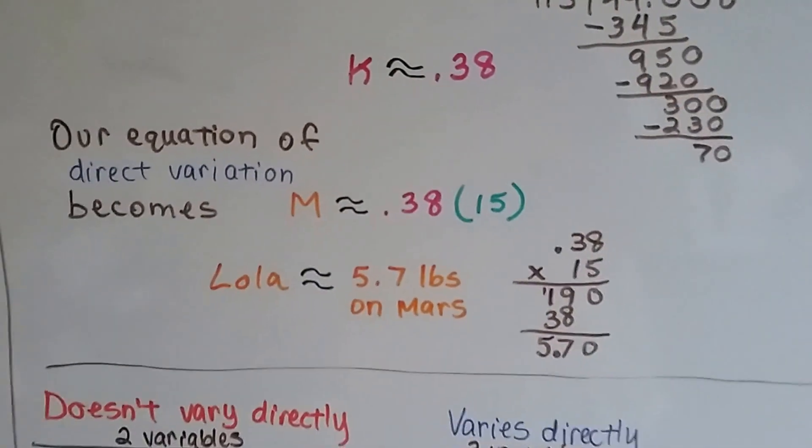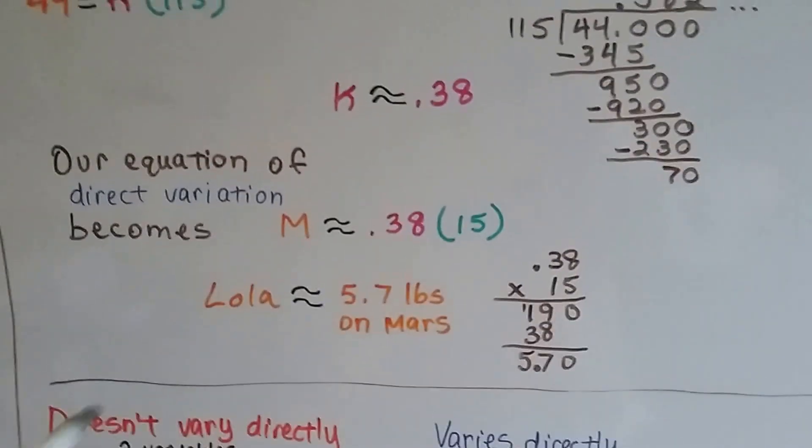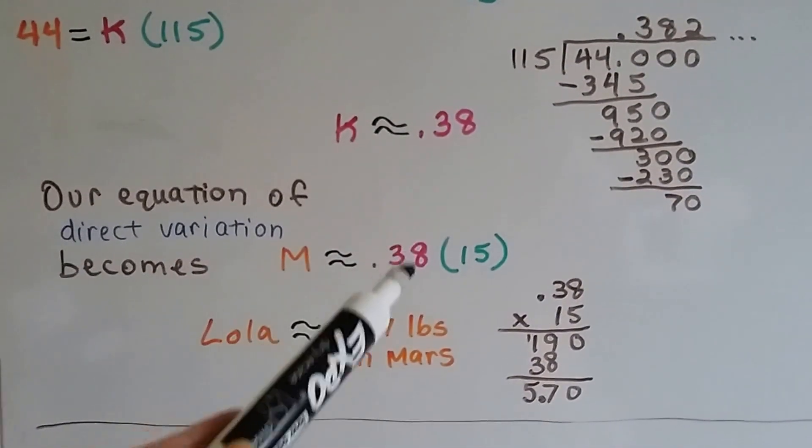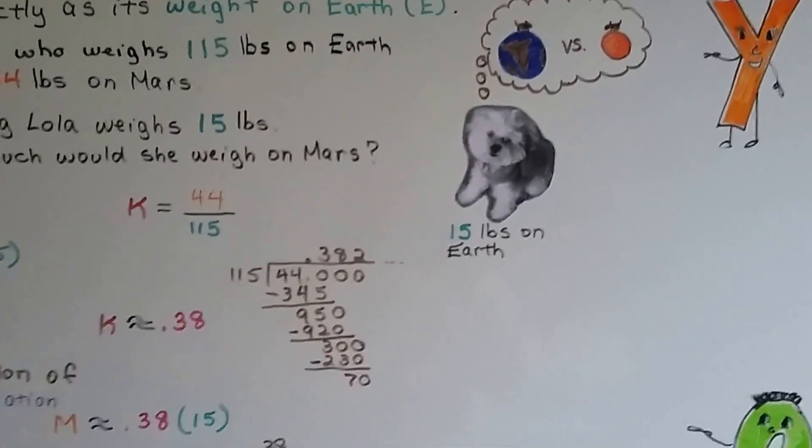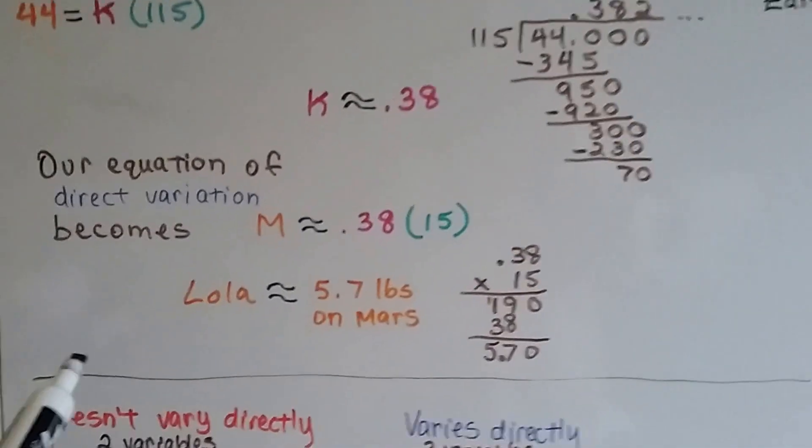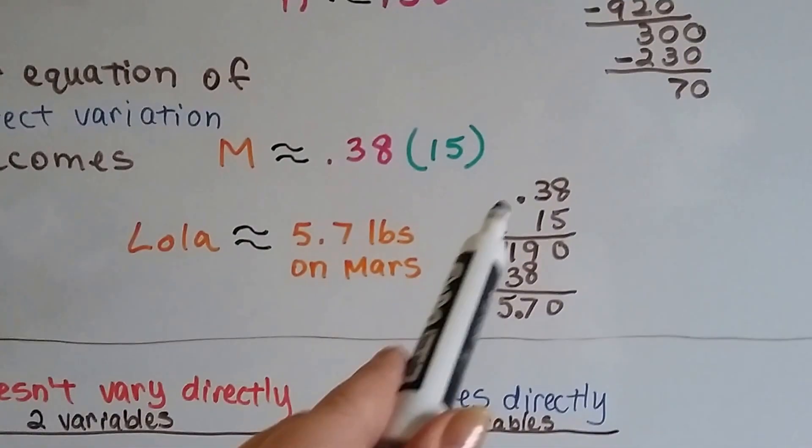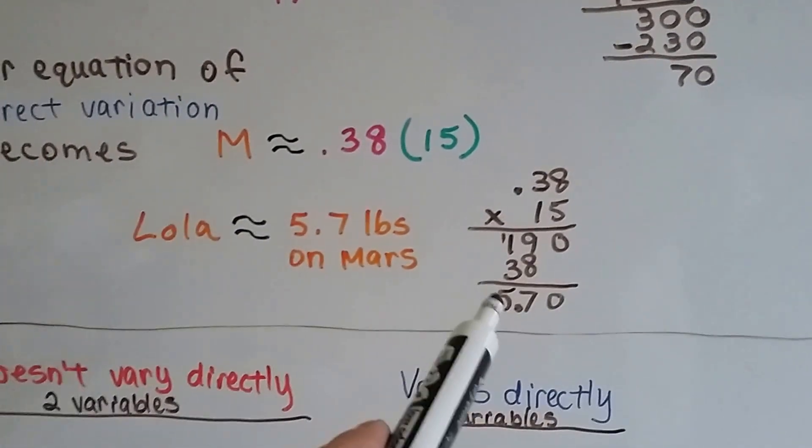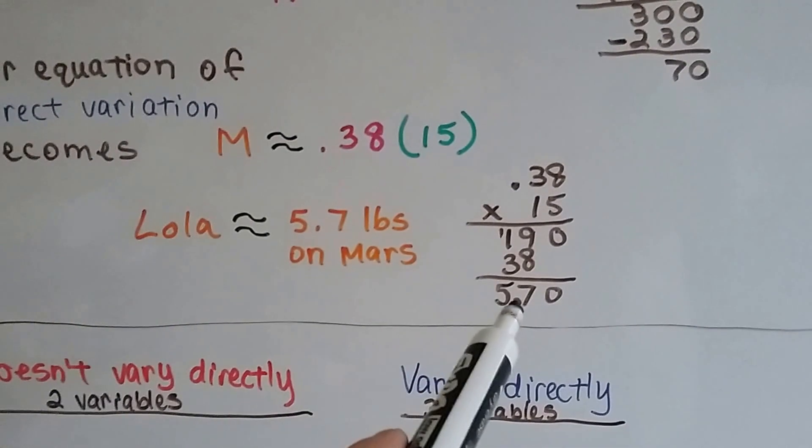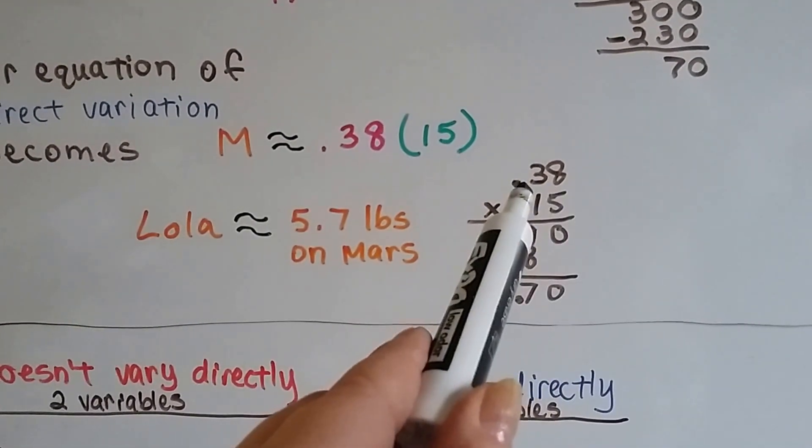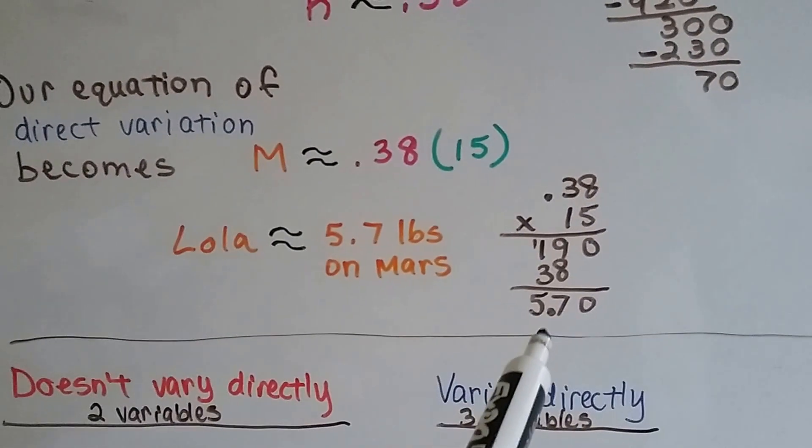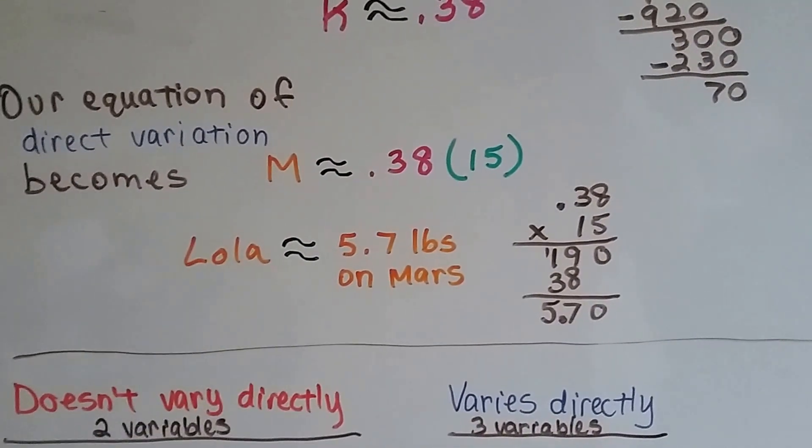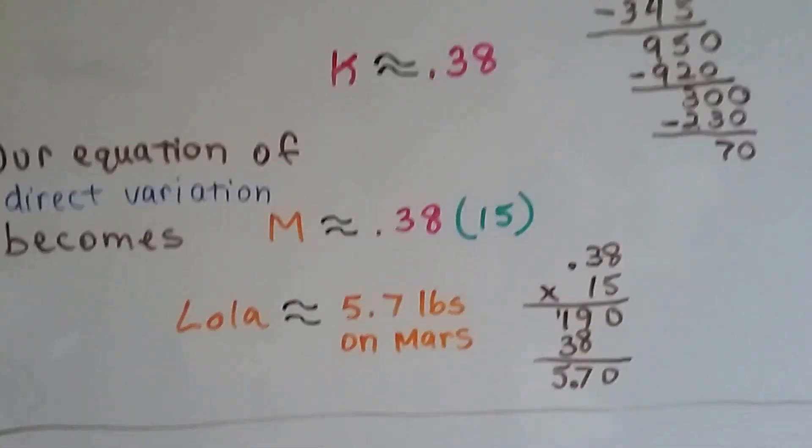Our equation of direct variation ends up becoming M is approximately .38 times 15, because Lola weighs 15 pounds on Earth. We do our multiplication, .38 times 15. We get 5.7. There's two hops in the equation, so there's two hops in the product. Lola would be approximately 5.7 pounds on Mars.